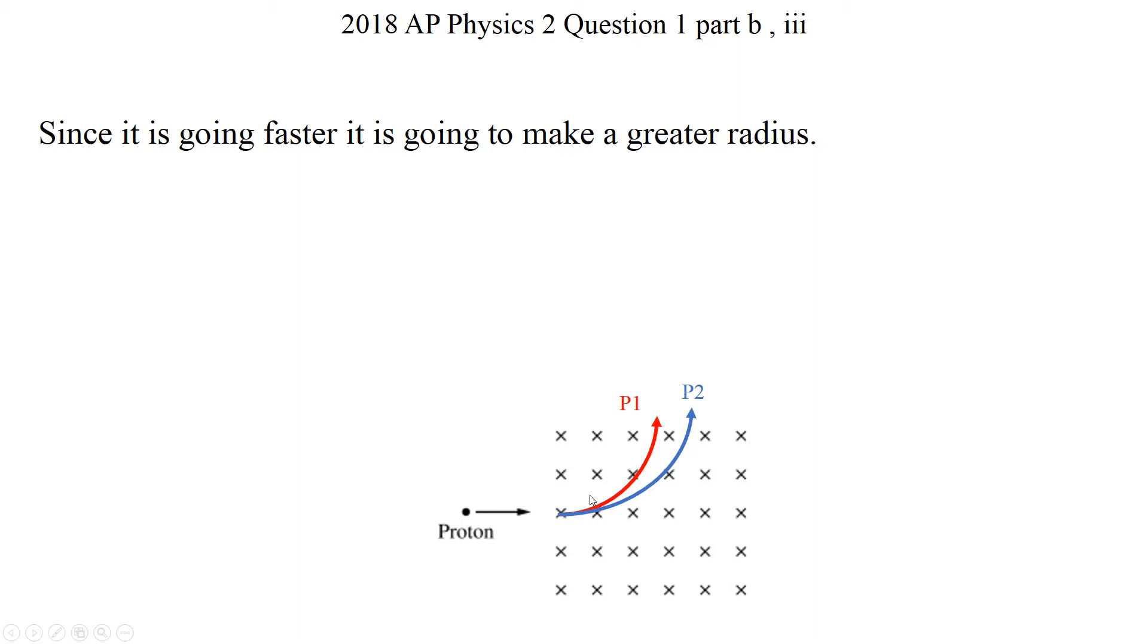Because if you think about it, if you shoot something, think about like a projectile motion. This is not exactly projectile, but you can think about projectile motion. If something is going slow, then it's going to go down faster. But if something is going faster, then it's going to take longer time for it to hit the ground. So that's because the curve is larger. Same idea.